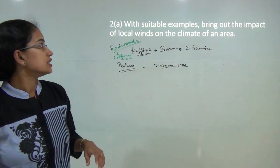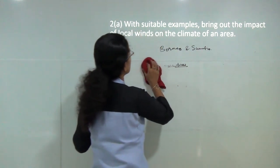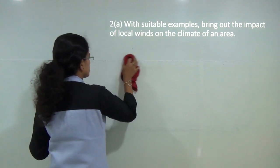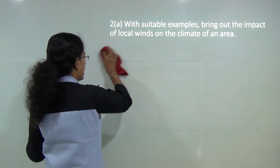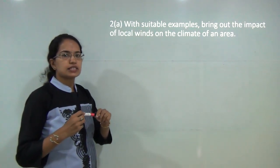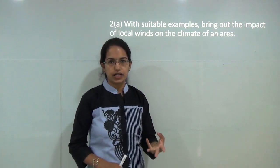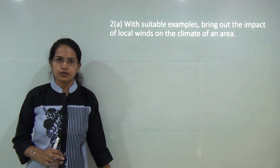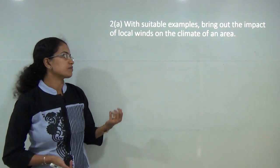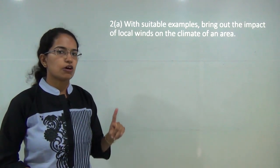The next question asks to bring out, with suitable examples, the impact of local winds on the climate of an area. Under the classification of winds, local winds form by three main causes: convective daytime heating, gravity downdraft, and unequal heating and cooling of the surface.